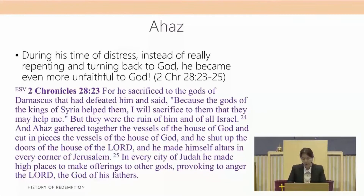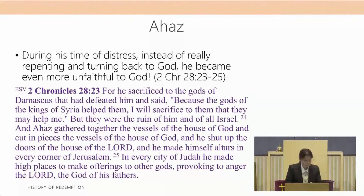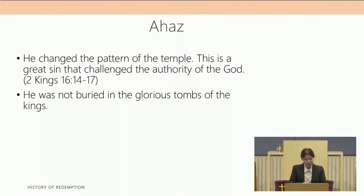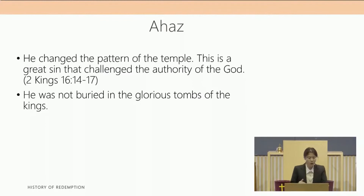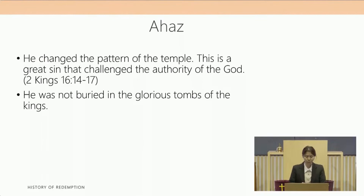Ahaz gathered together the vessels of the house of God and cut them in pieces. He made himself altars in every corner of Jerusalem and in every city of Judah he made high places to make offerings to other gods, provoking the Lord to anger. Worst of all, he changed the pattern of the temple — a pattern decided by God — which was a great sin challenging the authority of God, as recorded in 2 Kings 16 verses 14 to 17. When he died he was not buried in the glorious tombs of the kings, which was also a humiliation.